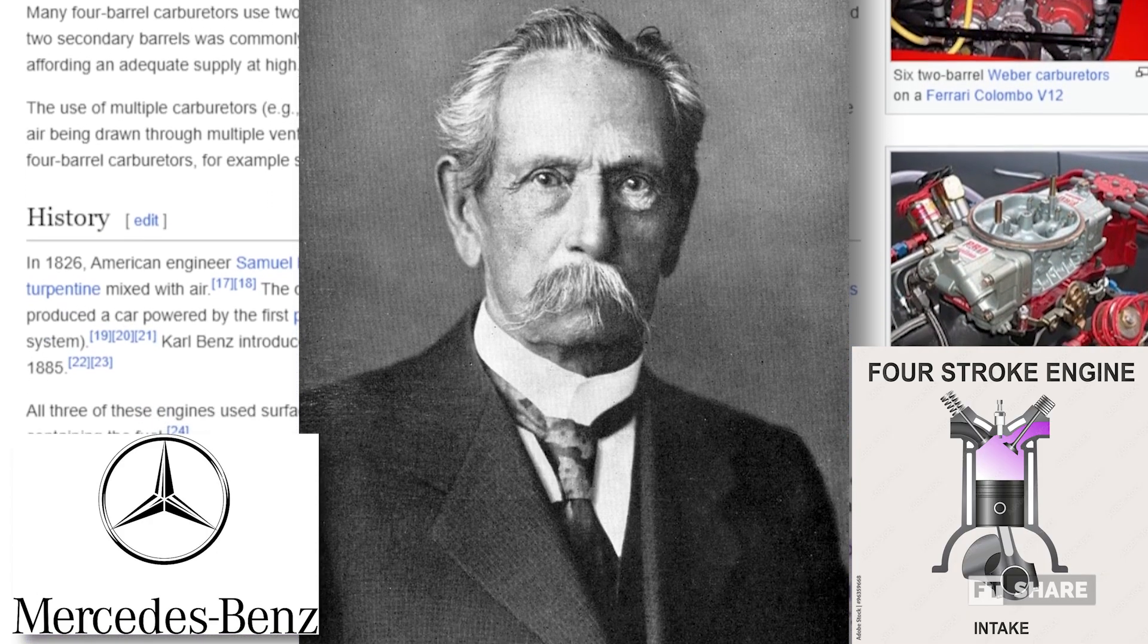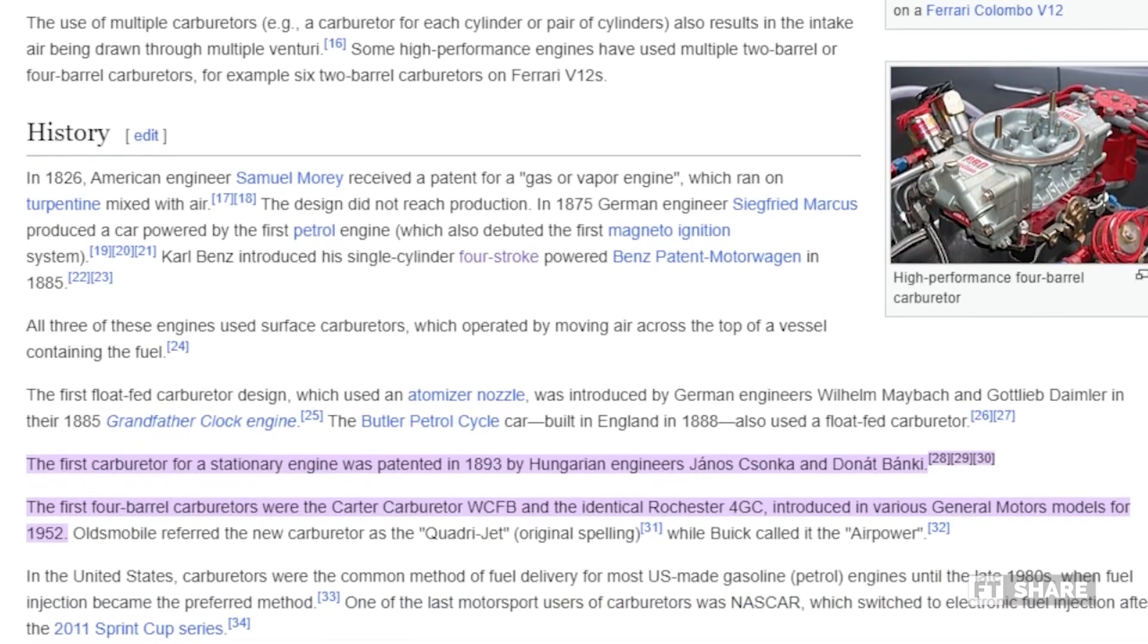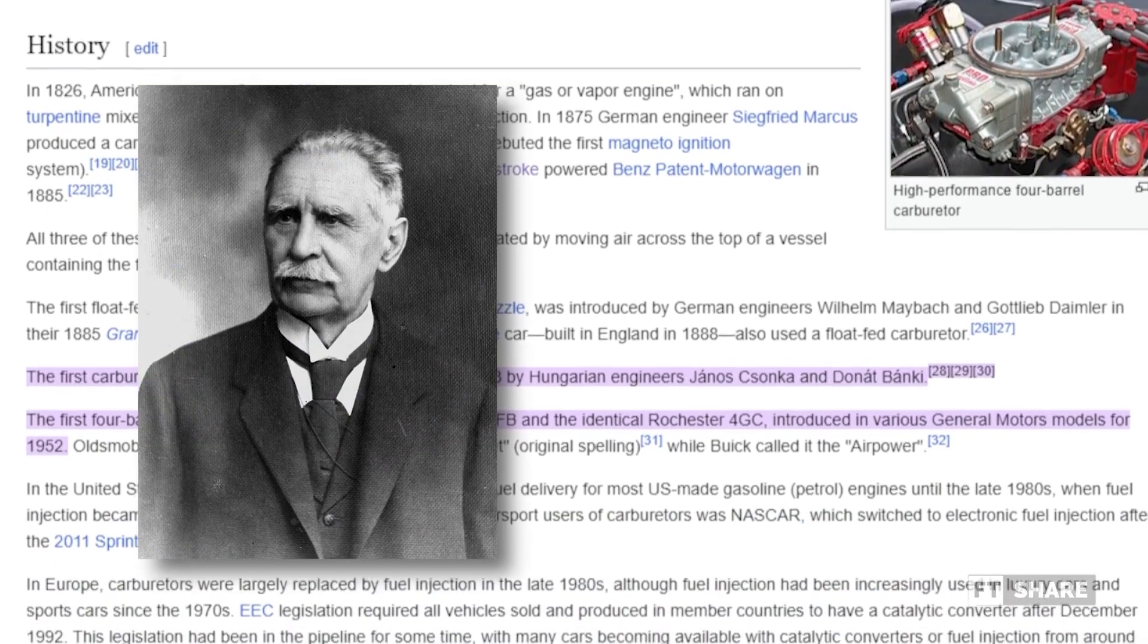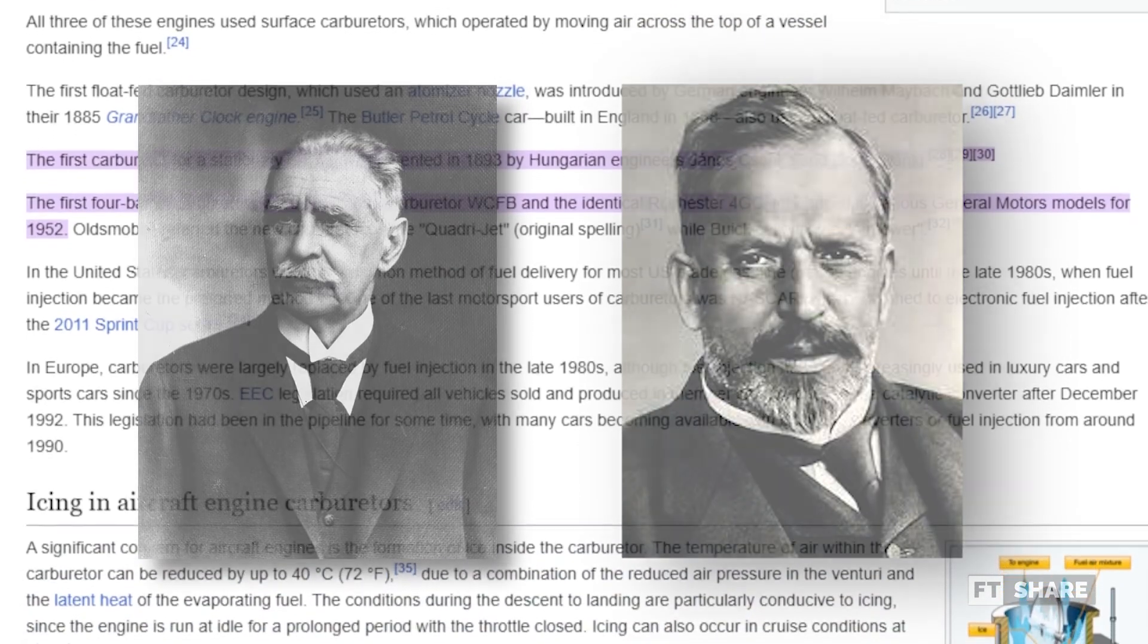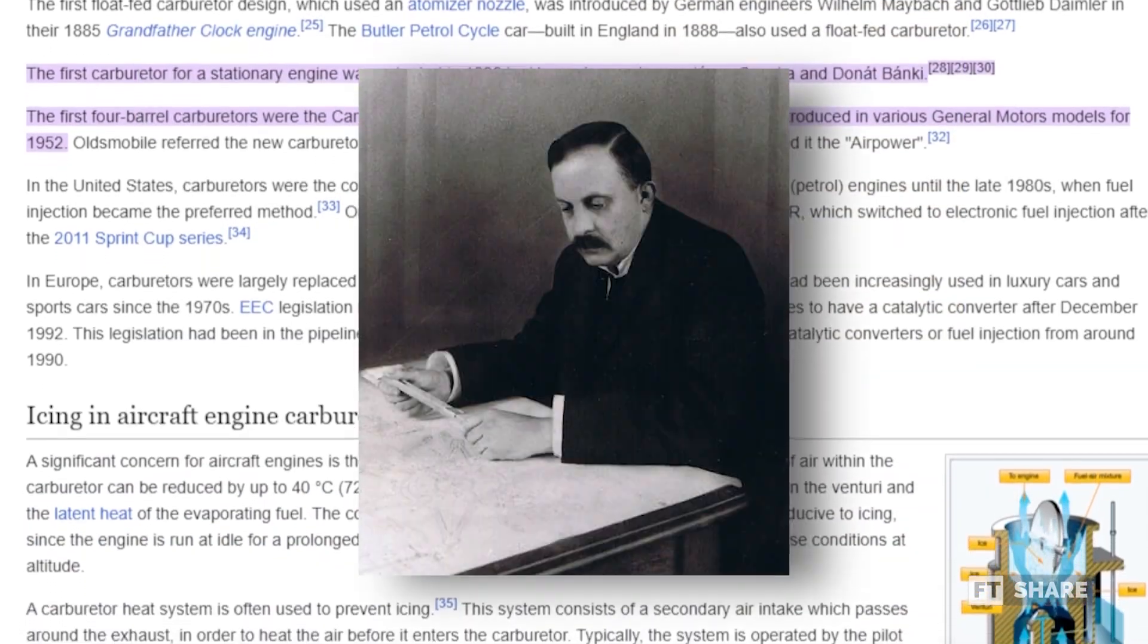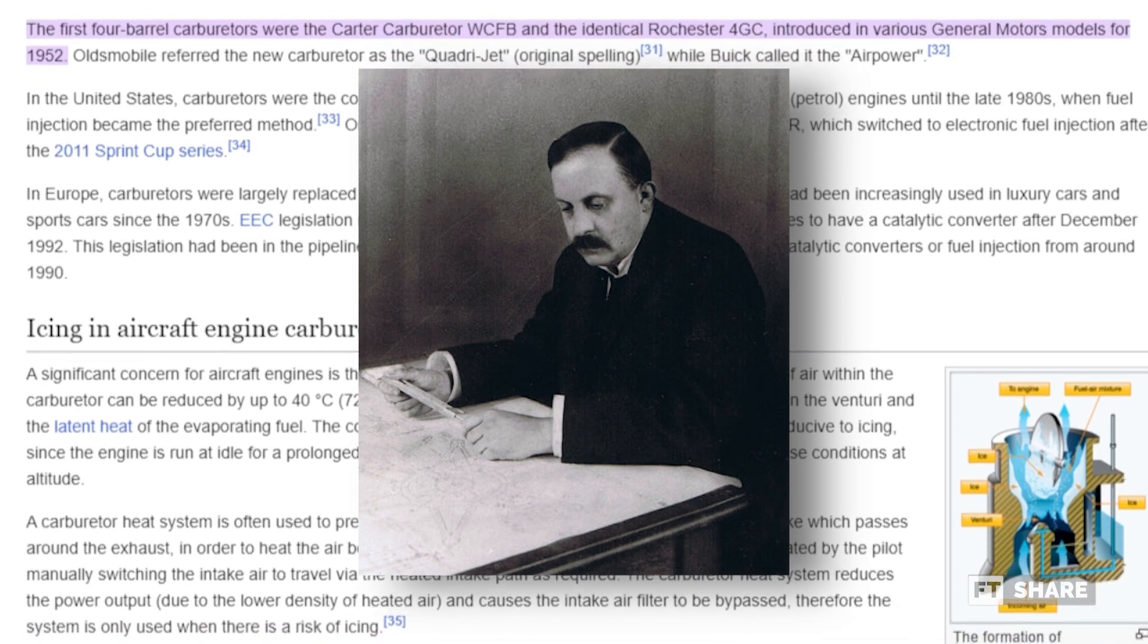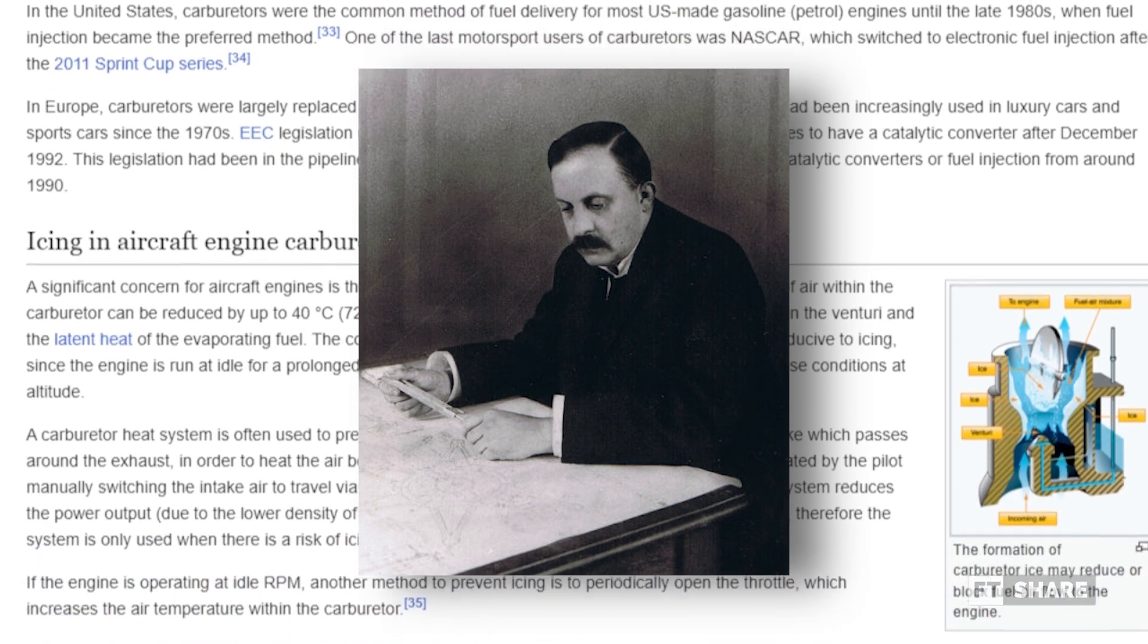In 1893, Hungarian engineers Janos Čnka and Donat Banke designed a device similar to the one previously mentioned. Later, Frederick William Manchester further developed this carburetor for use in four-wheeled vehicles.